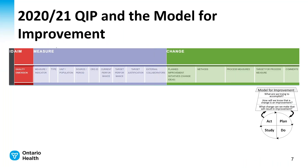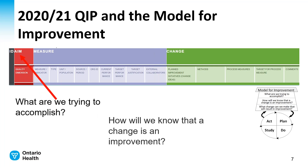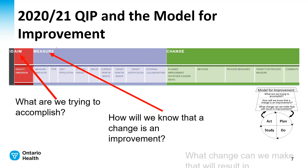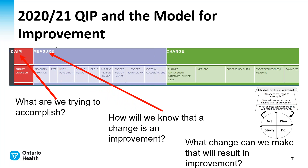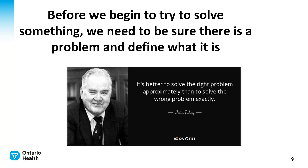Here is how it maps out on the work plan. "What are we trying to accomplish?" is there as your aim. "How will we know that changes are an improvement?" is in the measures section. "What change can we make that will result in improvement?" is in the change section. So let's talk about identifying the problem.